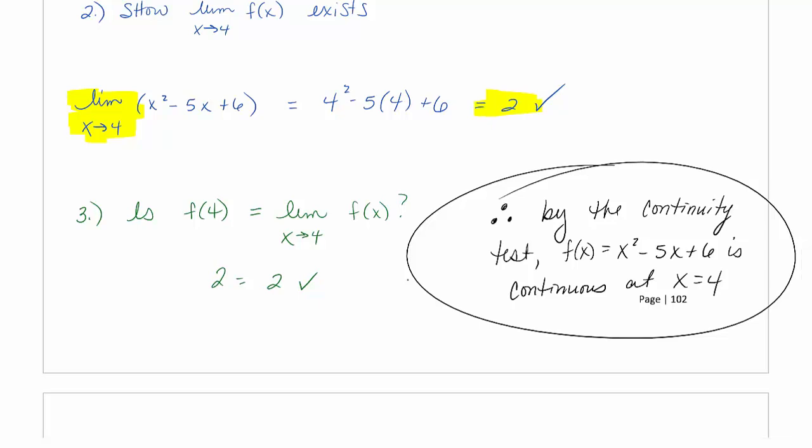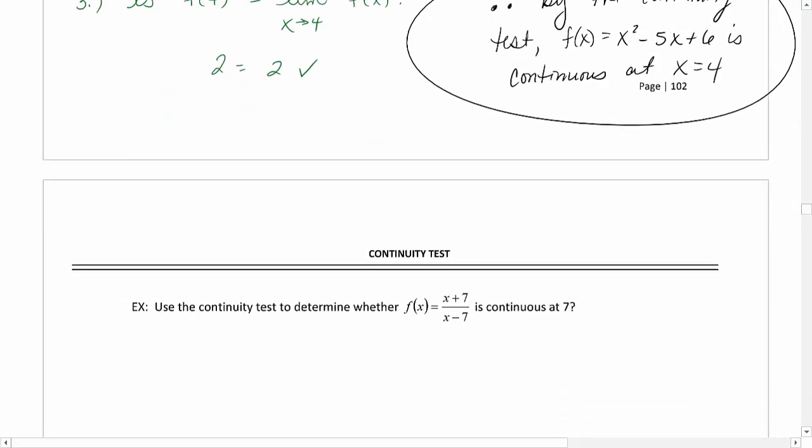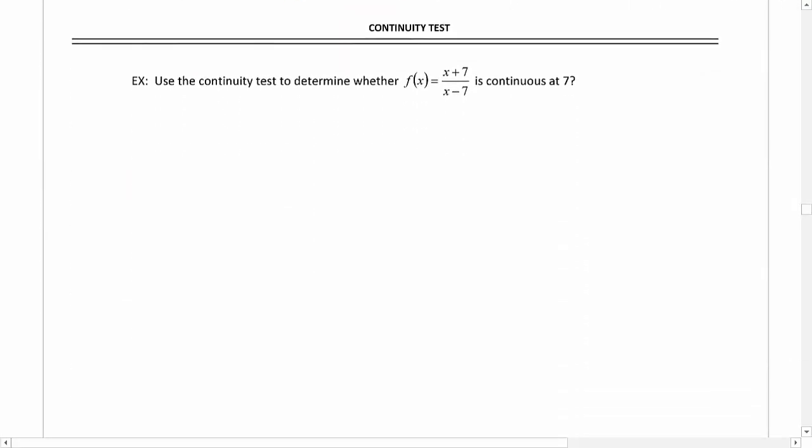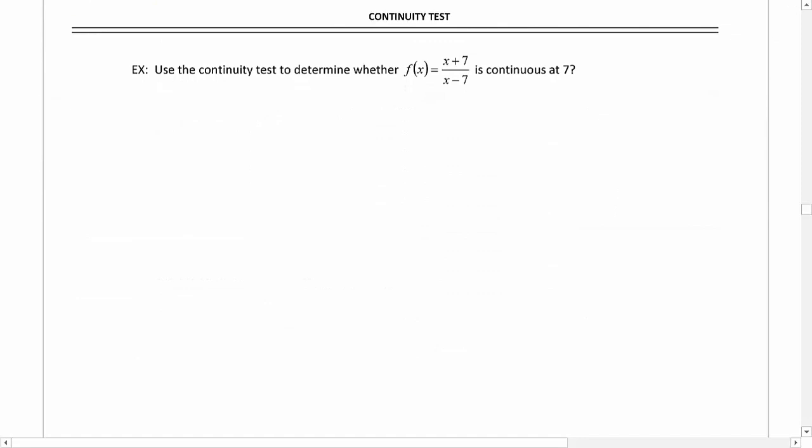So that one was nice because it's a polynomial. You'll be thrilled every time you're working with a polynomial in calculus. They always work out nice. So let's look at one that is more complicated. Let's look at a rational function.